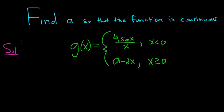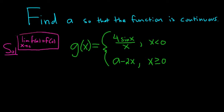Recall that the definition of continuity is that the limit as x approaches c of f(x) is equal to f(c). This is what it means for a function to be continuous at c. There are two more conditions, but this condition alone implies the other two.